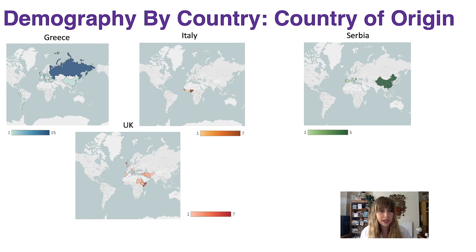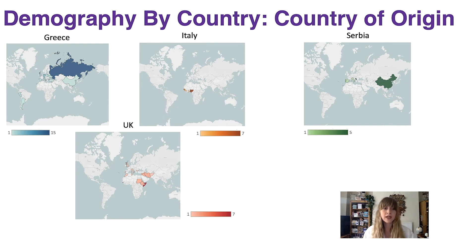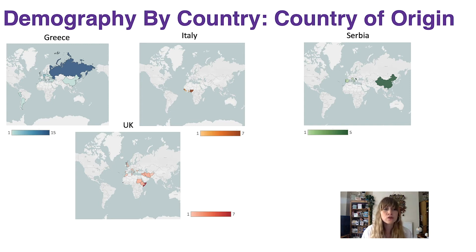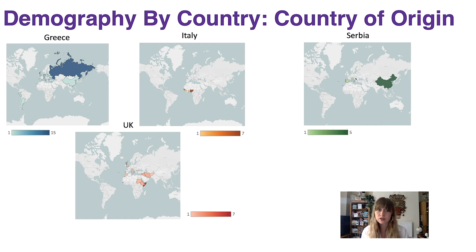In terms of country of origin, as you can see from these maps, we've got varied countries of origin within each of the countries under study. For Greece, in the top left, you can see quite a dispersal of country of origin across the globe — from South America, Asia, Europe — however, with a concentration of students from Russia. In Italy, all the students originate from Africa, with the majority originating from Nigeria, with seven students from there.